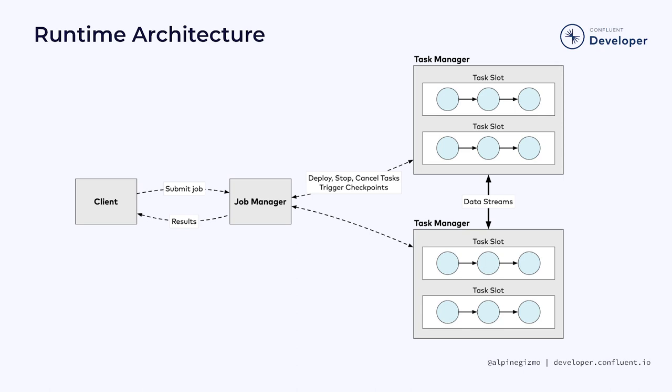Once the job is running, the job manager remains responsible for coordinating the activities of the Flink cluster. For example, it coordinates checkpointing and restarts task managers if they fail.